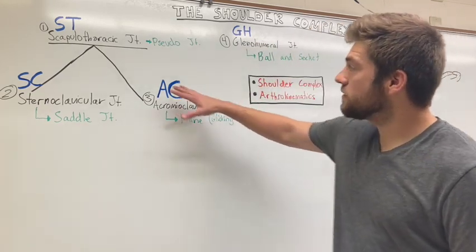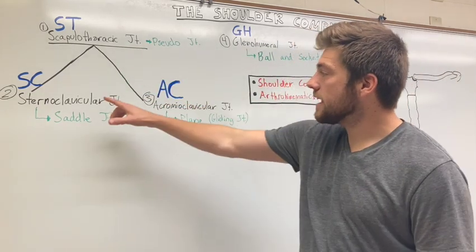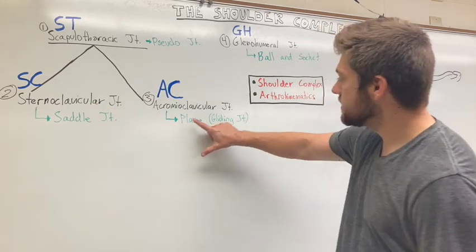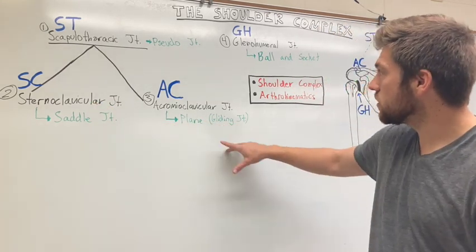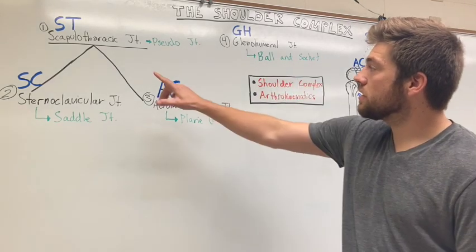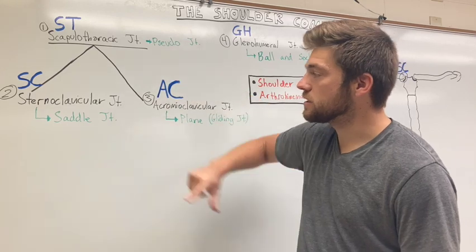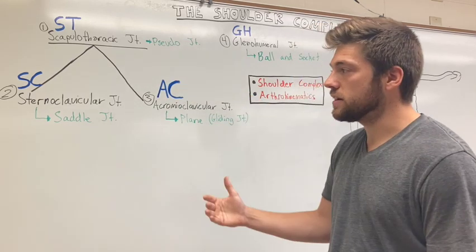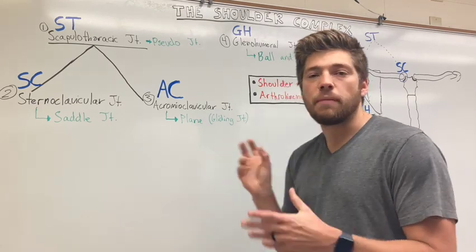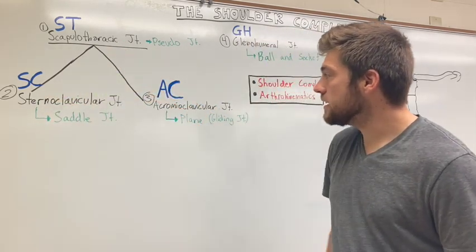So you have four joints: the scapulothoracic joint, the SC joint or the sternoclavicular joint, the AC joint or the acromioclavicular joint, and the glenohumeral joint. The scapulothoracic joint is pseudo because it's kind of made up — it's a way to describe two different joints combined together, and that's a combination of the SC and the AC.